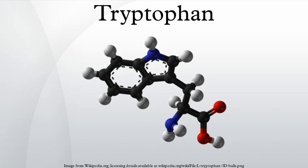Isolation: The isolation of tryptophan was first reported by Frederick Hopkins in 1901 through hydrolysis of casein. From 600 g of crude casein, one obtains 4–8 g of tryptophan.